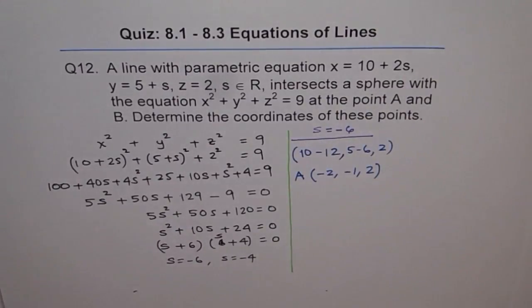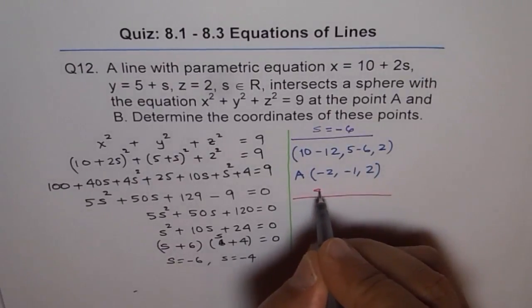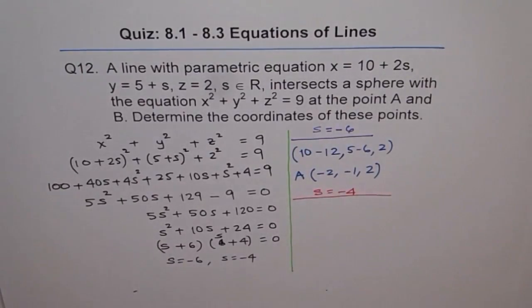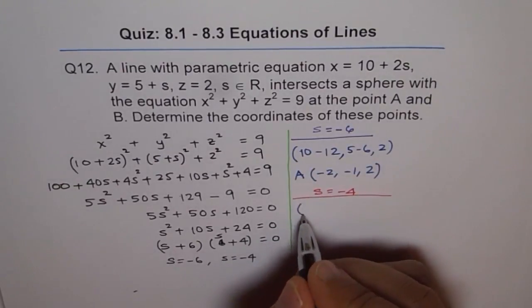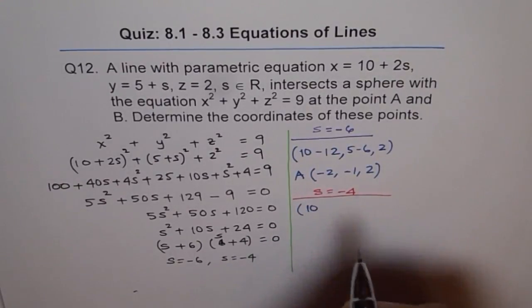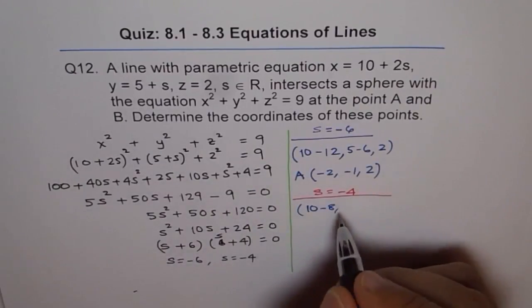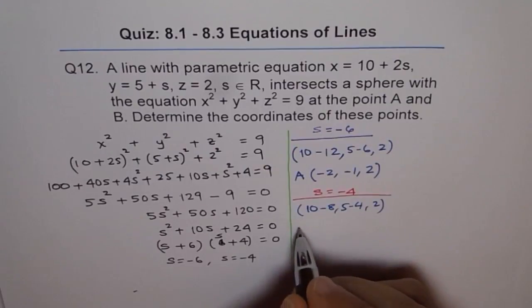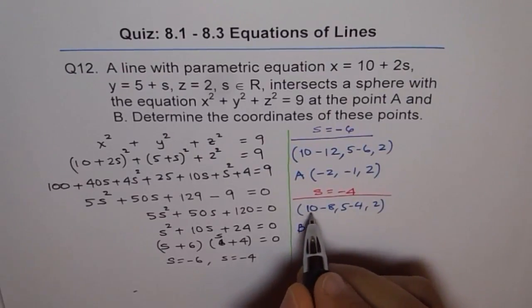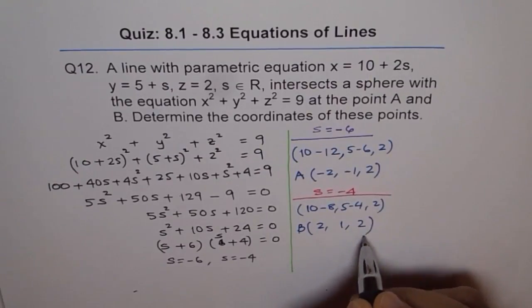Now let's put s equals minus 4 for the second set of points. So we get 10 minus 4 times 2 is minus 8, 5 minus 4 and number 2. So point B for us is 10 minus 8 is 2, 5 minus 4 is 1 and this is 2.